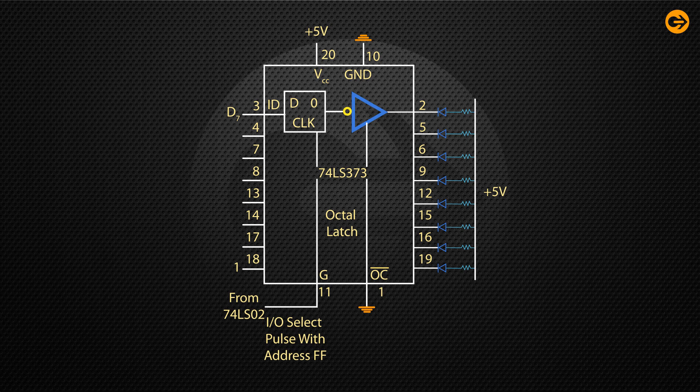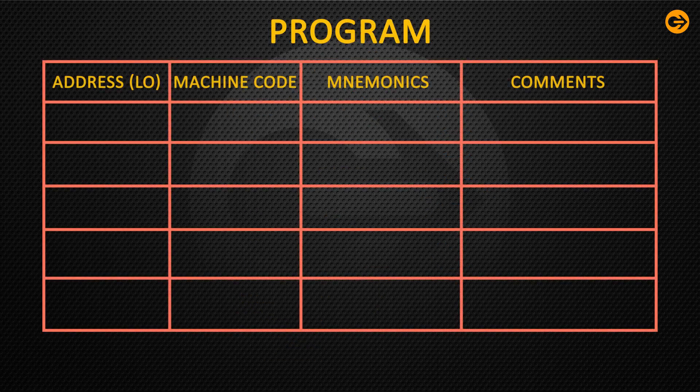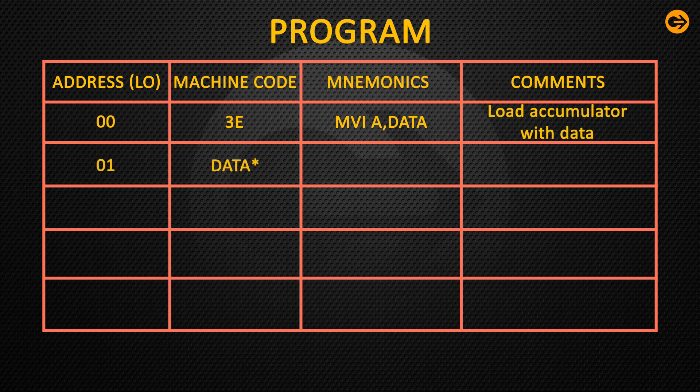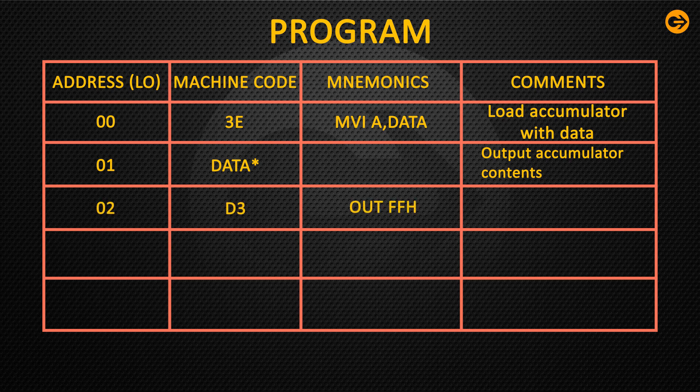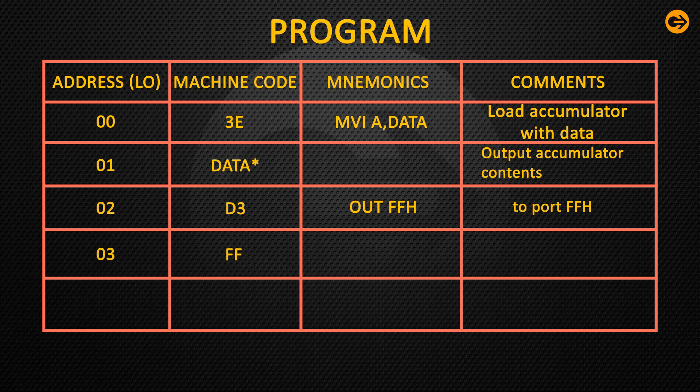Program description: Instruction MVI A loads the accumulator with the data we enter. An instruction OUT FFH identifies the LED port as the output device and displays the data.